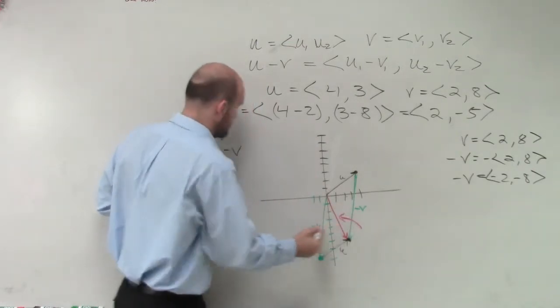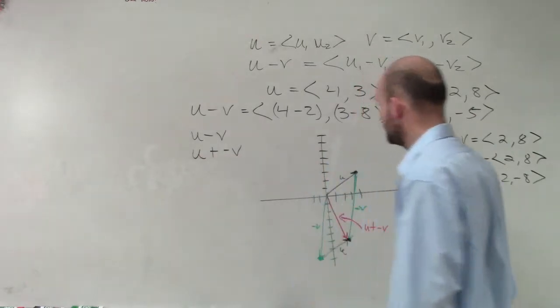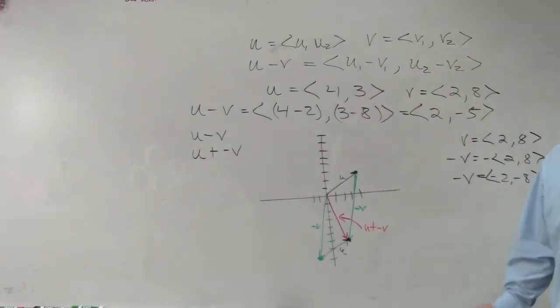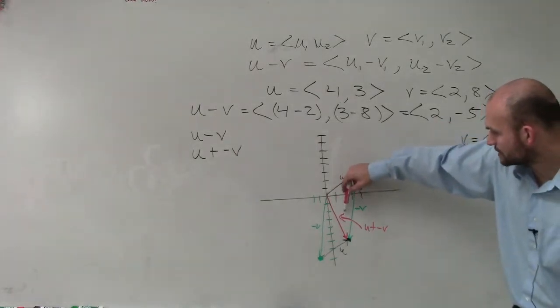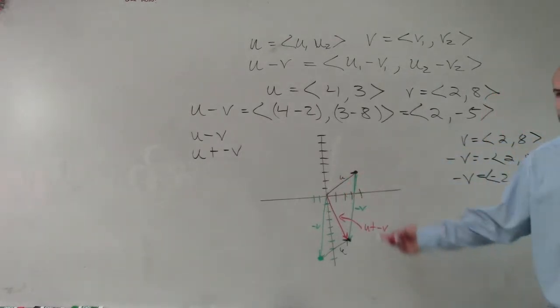And this form is going to be u plus negative v. So let's figure out. Now I don't know if I did this right, but let's double check. Does this look like at two negative five? Over two, down five. One, two, three, four, five. Yeah.